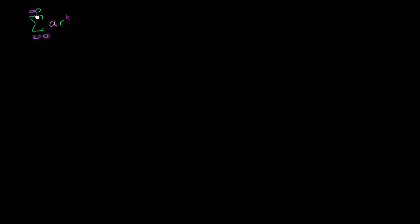We're going to start at k equals 0 and go all the way to infinity — we're never going to stop adding terms. It's going to be our first term times our common ratio to the k-th power, k equals 0 all the way to infinity. Let's call this thing right over here S sub infinity.